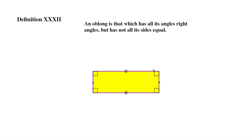Definition 32: an oblong is that which has all its angles right angles but not all its sides equal. So just like a square it has all four angles equal to 90 degrees, but its sides are not all equal.